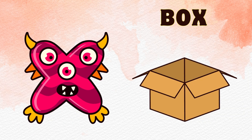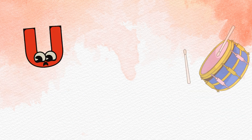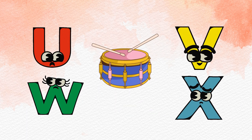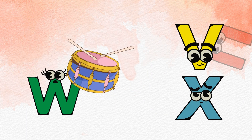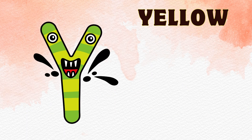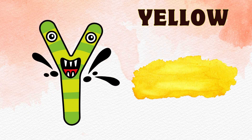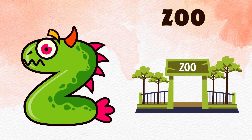And X is for Box, X-X-Box. Y is for Yellow, Y-Y-Yellow. Z is for Zoo, Z-Z-Zoo.